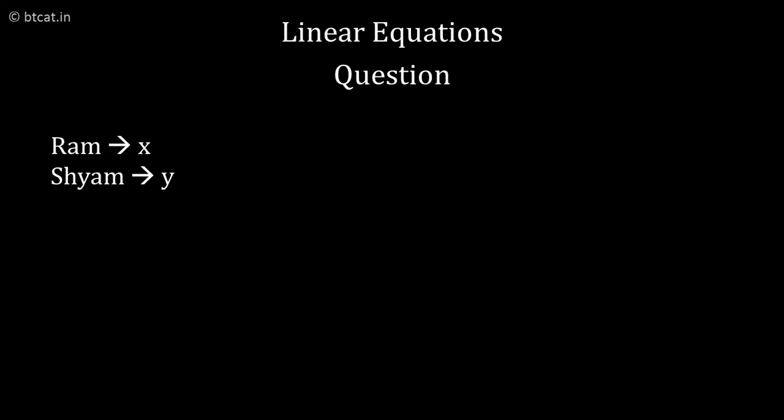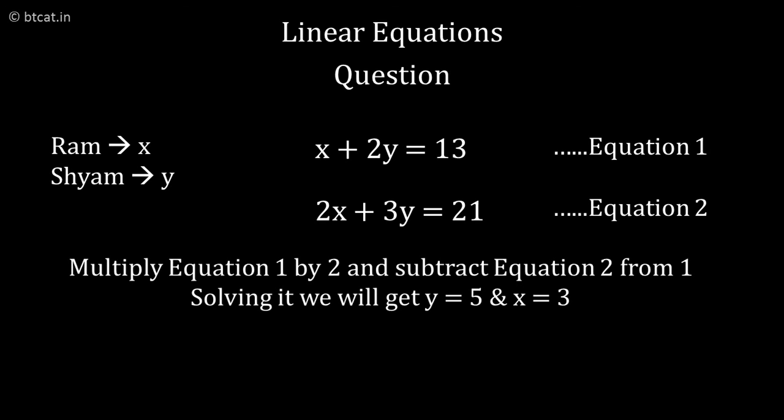If you make equations, x plus 2y equals 13 and 2x plus 3y equals 21. If you solve it by multiplying the first equation by 2 and eliminating x, we can get y equals 5. Substituting the value of y in any of the equations, we will get x equals 3. So the answers are 3 chocolates with Ram and 5 chocolates with Sham.